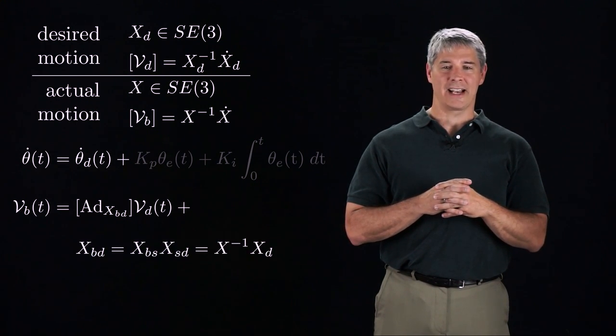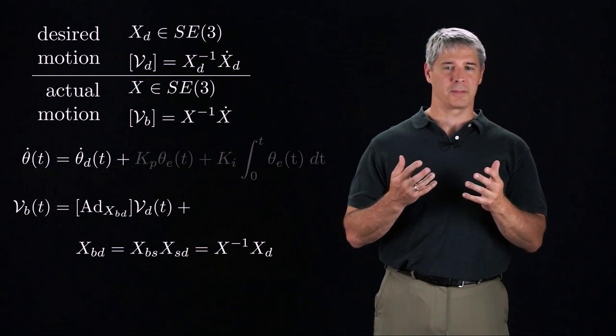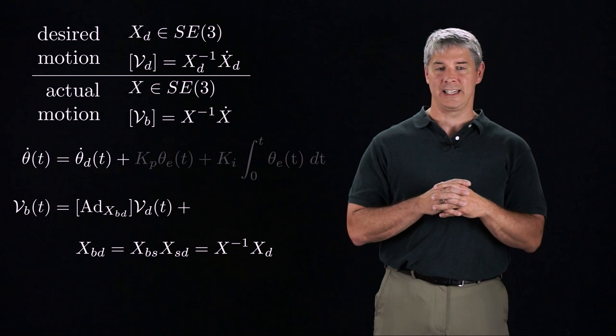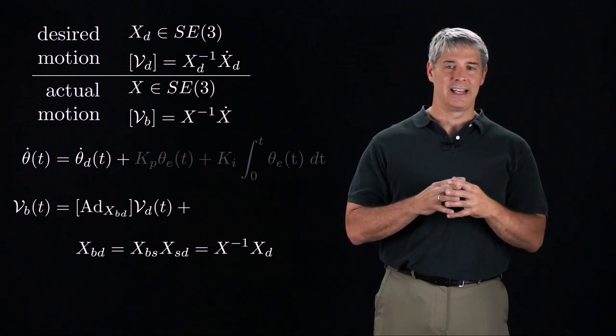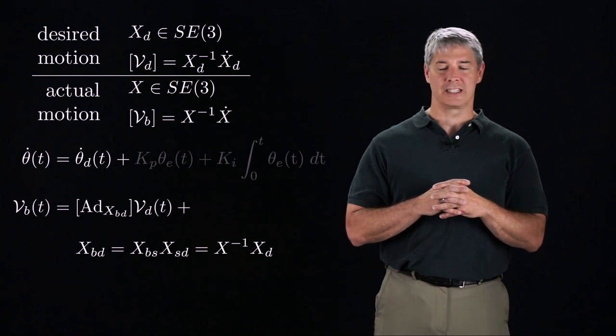Xbd is calculated as X inverse times XD, which we can derive by remembering our subscript cancellation rule, and that XD can be written Xsd and X can be written Xsb, where S is the implicit space frame.